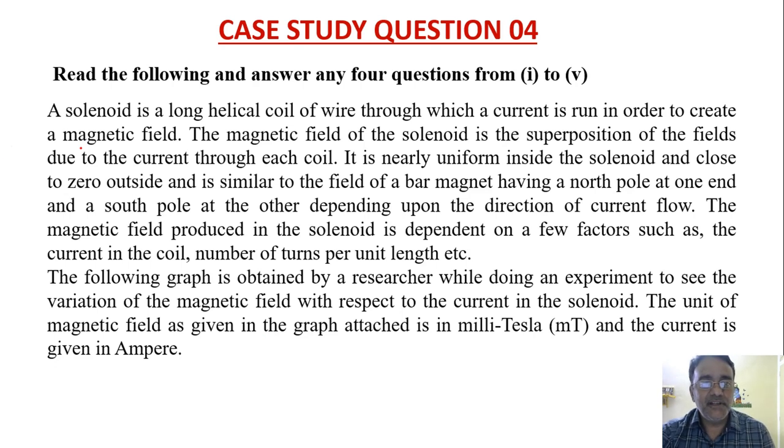So I am reading the statement. A solenoid is a long helical coil of wire through which a current is run in order to create a magnetic field. The magnetic field of the solenoid is the superposition of the fields due to current through each coil.